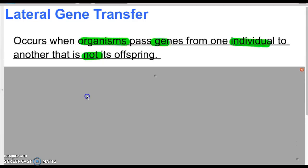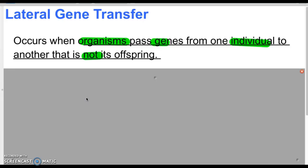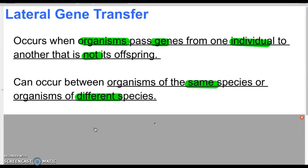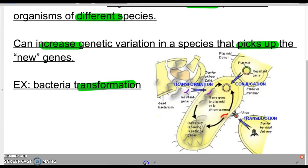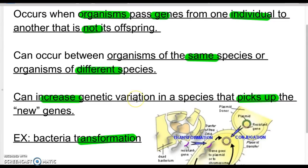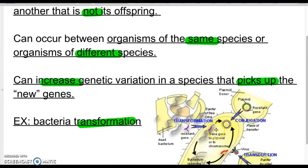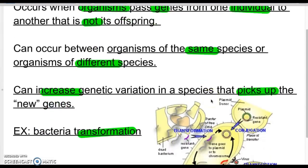The last source is lateral gene transfer, which is similar to transformation. Organisms can pass their genes from one individual to another — not to their offspring, but essentially to a neighbor or cousin. This can occur between organisms of the same species and some of different species, increasing genetic variation. You may remember this from bacteria, where bacteria spit plasmids and genetic information into another bacterial cell. This process is also used with genetically modified organisms.